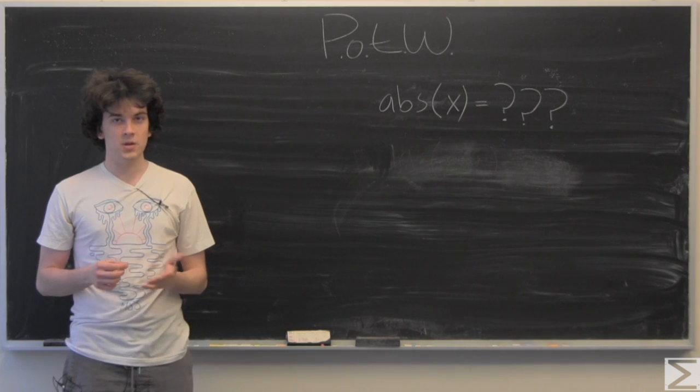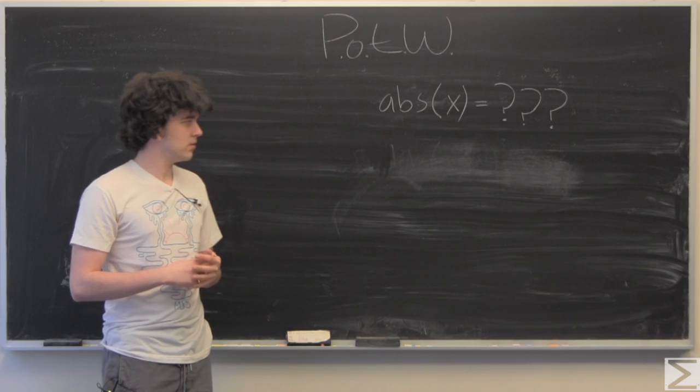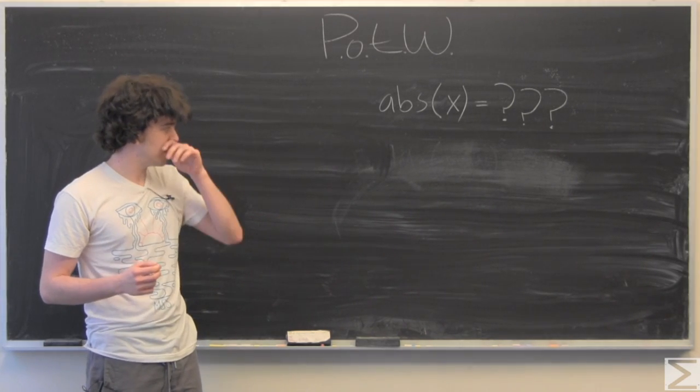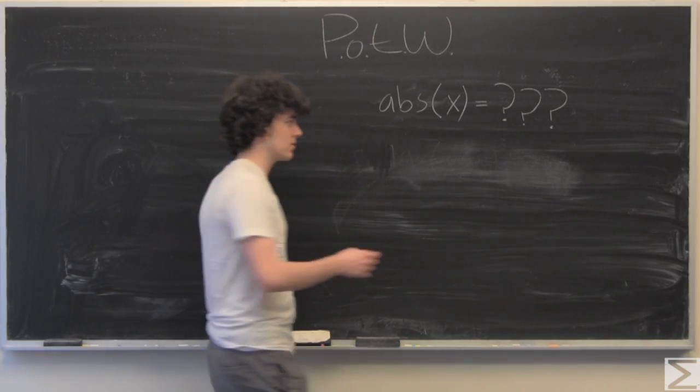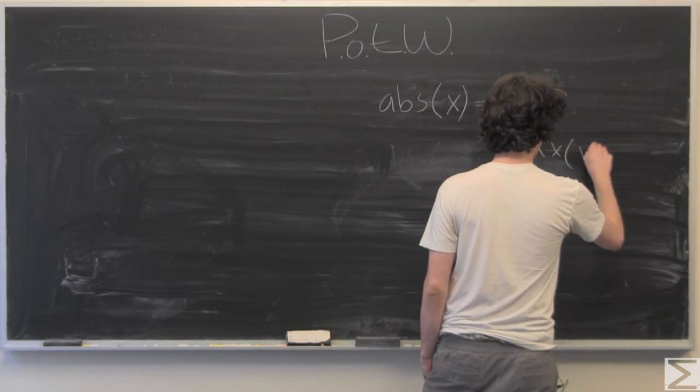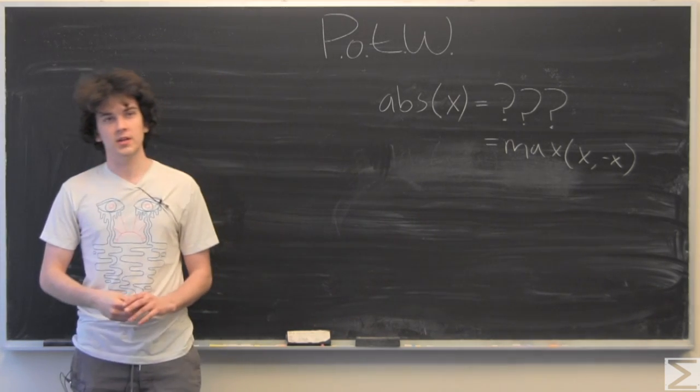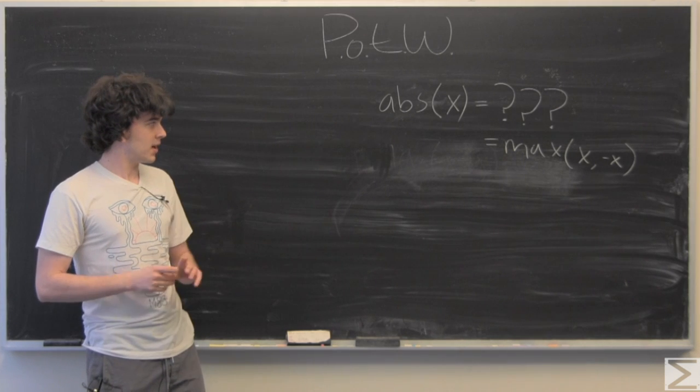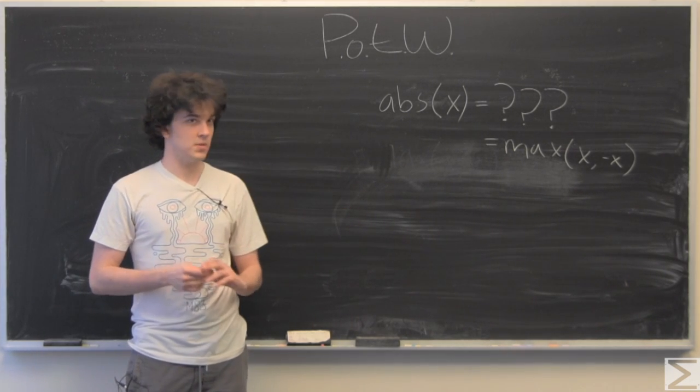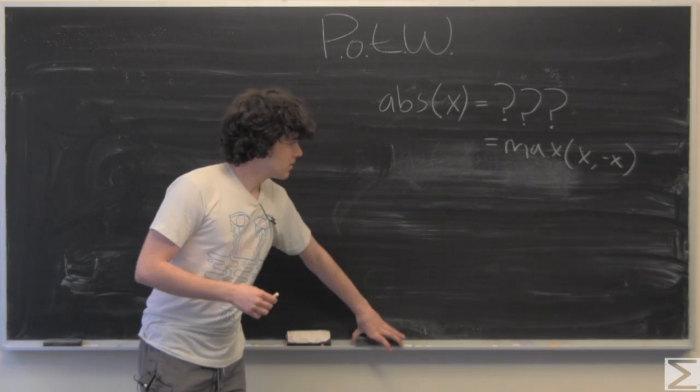But in terms of the max value function, all you have to do is take the maximum of x and negative x. That way you account for x and its negative counterpart. So even if x is negative, that negative x is going to be positive and that's the bigger number. So that one's fairly easy.